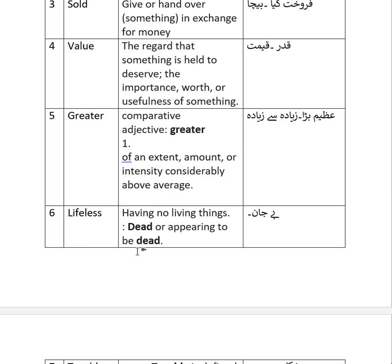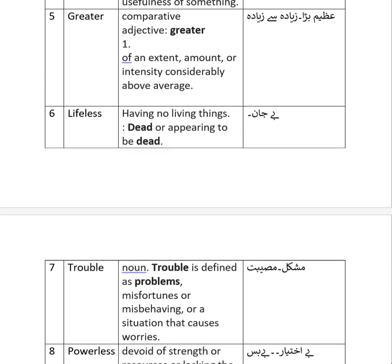Number 5 is 'greater' — comparative adjective; of an extent, amount, or intensity considerably above average. In Urdu: Azeem, bada, zyada si zyada. Number 6 is 'lifeless' — having no living things; dead or appearing to be dead. In Urdu: Bejaan.